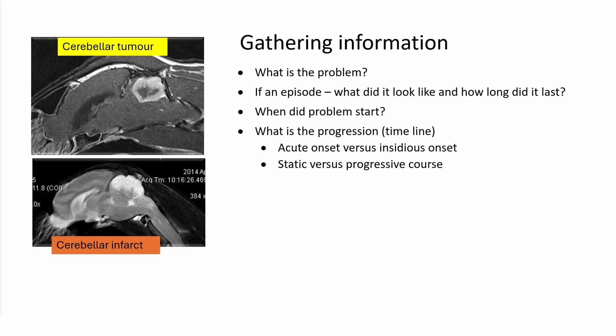Was it acute onset versus something insidious that the owner can't quite pinpoint when it started? Has the course been static or progressive? If it's progressive, has the animal improved? Usually that's a much better prognosis than if the animal has been getting worse. Here I show two examples of animals presenting with cerebellar problems that, on the face of it, look relatively similar.